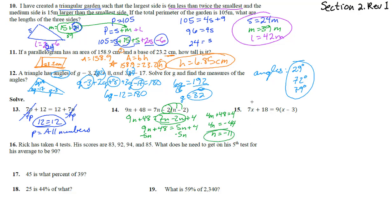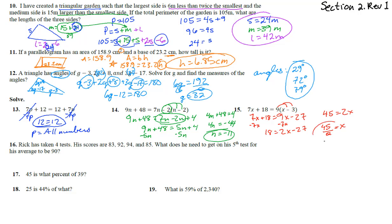Number 15: 7x plus 18 equals 9 times (x minus 3). Distributing the 9 gives 7x plus 18 equals 9x minus 27. Subtracting 7x gives 18 equals 2x minus 27. Adding 27 gives 45 equals 2x, so x equals 45/2 or 22.5.